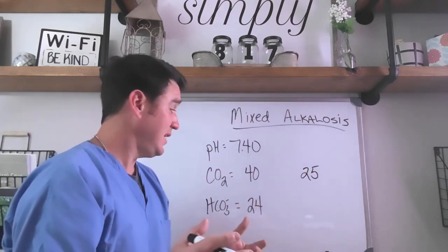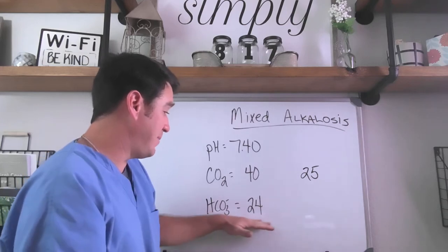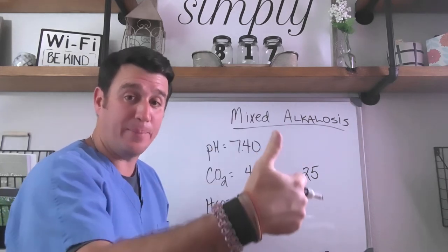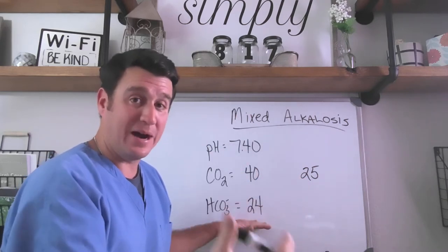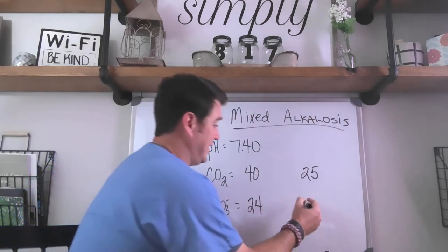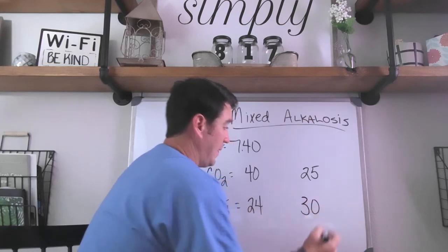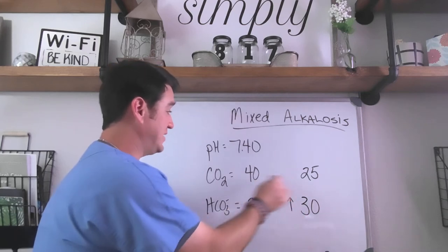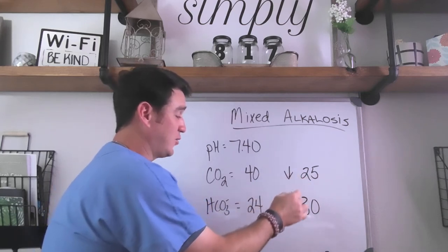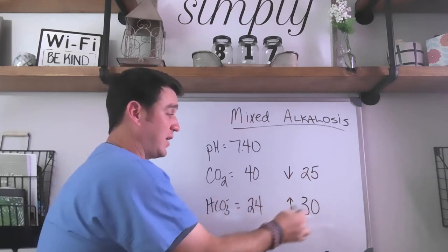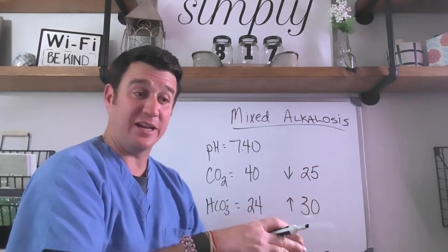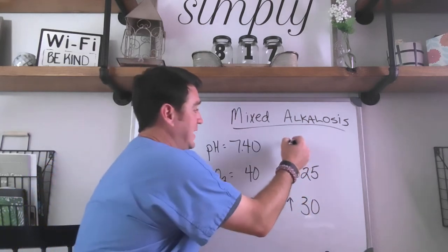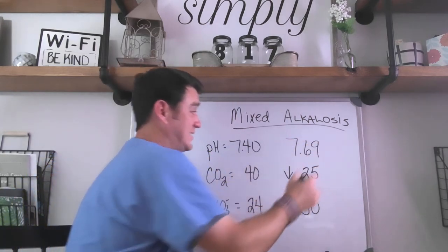So let's just say it goes down to 25. On our bicarb side of things and our metabolic component, we know that when bicarb goes up, that creates a metabolic alkalosis. So let's say that this is 30. So here we have a bicarb that is elevated, we have a CO2 that is decreased, both of these will create an alkalosis. So what you're going to see here is an exaggerated alkalotic pH, and what we get when we do this is 7.69.